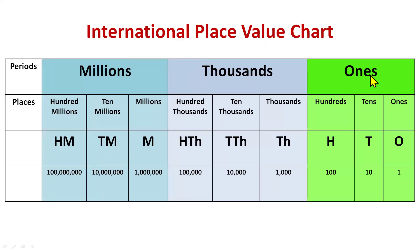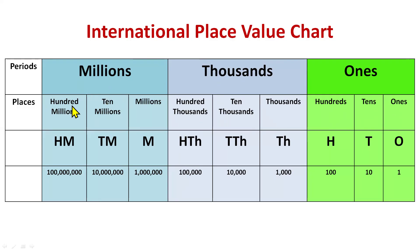In the international place value chart we have three periods, and under each period we have three places. For ones we have ones, tens, hundreds — same as Indian. But in the thousands period we have three places: thousands, ten thousands, and hundred thousands. Then we have millions, ten millions, and hundred millions. We also have short forms for all these places.